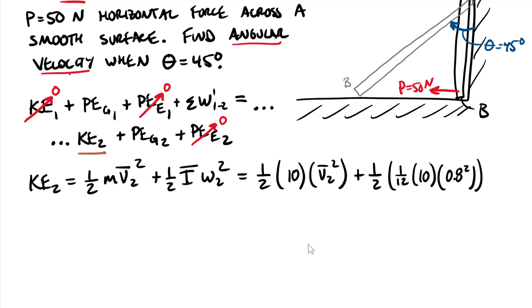Figuring out the numeric value of what we know, we have 5 times v bar 2 squared plus 0.267 times omega 2 squared. Two unknowns currently in our kinetic energy.